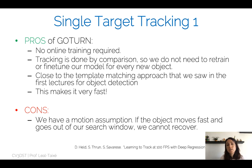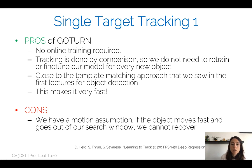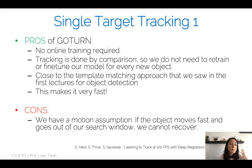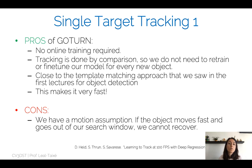Tracking in GOTURN is done by comparison — the Siamese network compares the previous patch with the current patch to find where the object has moved. This is very close to the template matching approach seen in earlier detection lectures. The approach is fast but has a strong motion prior: the assumption that the object moves slowly and smoothly. If the object moves very fast, it will exit the search window, causing the features inside the window to depict only background.